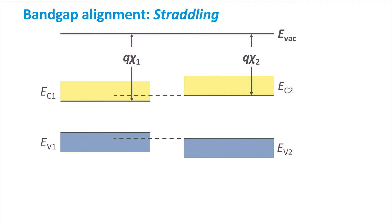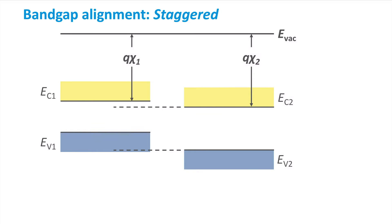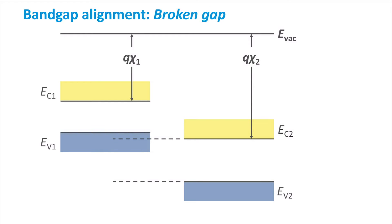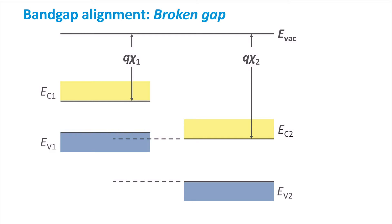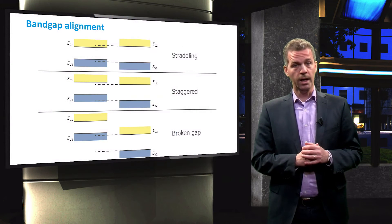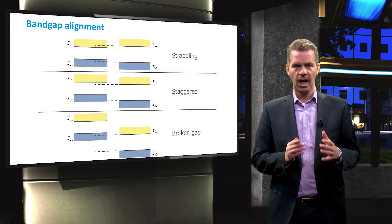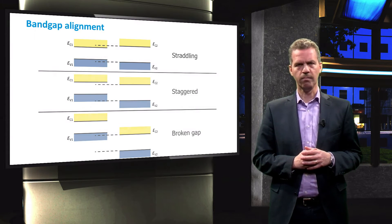We distinguish three types of band alignment in the heterojunction. The first type is called straddling, which means that the high band gap material encloses the band gap of the low band gap material. The second type is called staggered, where the conduction band edge of one material is positioned inside the band gap of the other material, while the valence band is below the valence band of the other material. Finally, the last type is called broken gap, where the band gaps are completely misaligned — the conduction band edge of one material is below the top of the valence band of the other material. In this course we will focus on the straddling band alignment.